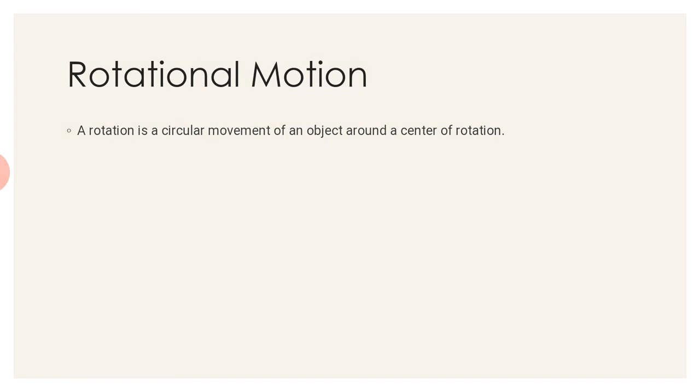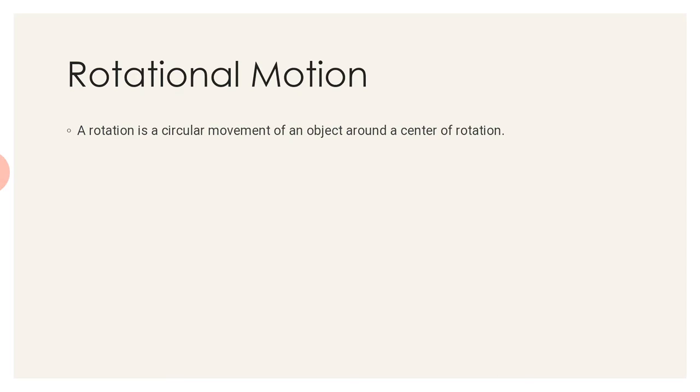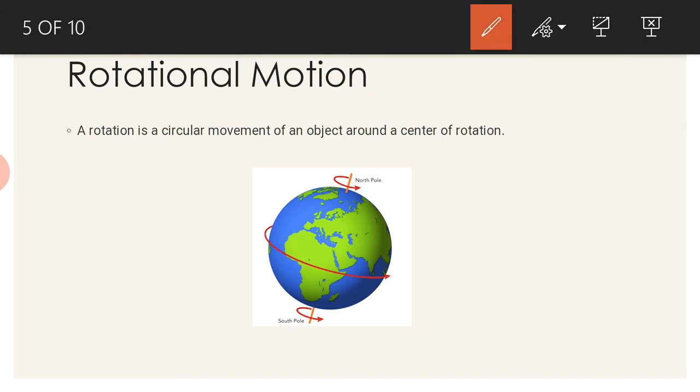Rotational motion is the motion in which the object takes a circular path around a central axis. For example, we can see the rotation of the earth. In the rotation of the earth, we see that there is a fixed axis around which the earth rotates.